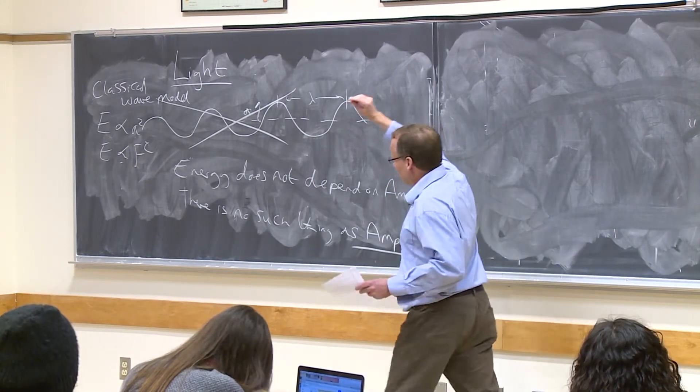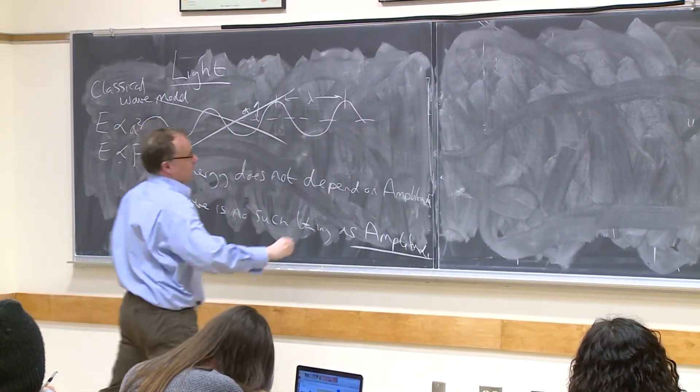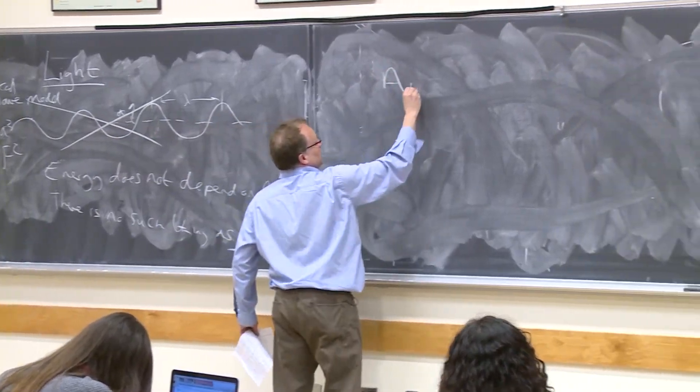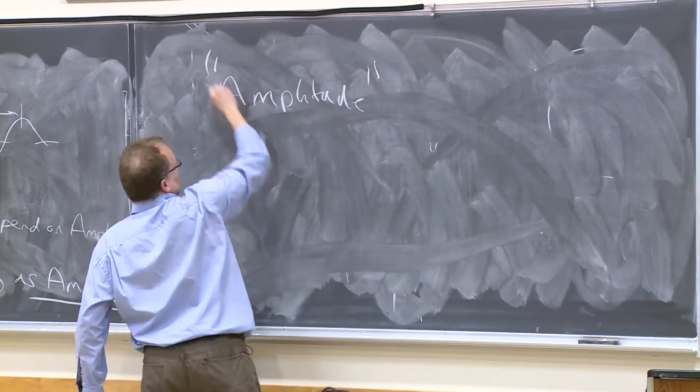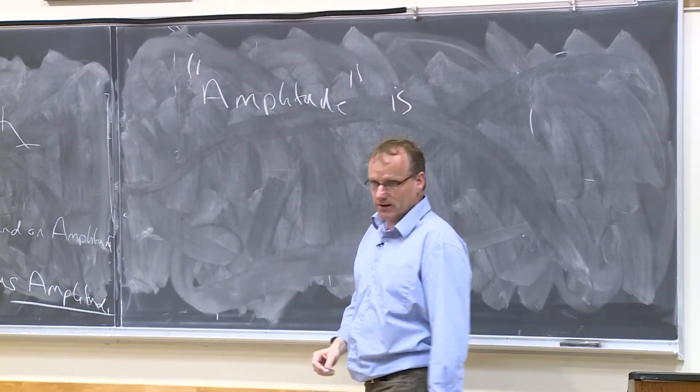So instead of having the energy being proportional to the amplitude squared, the amplitude is essentially—this is not exact—but it's essentially replaced by the number of photons.